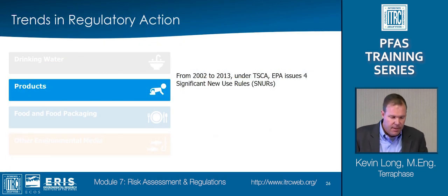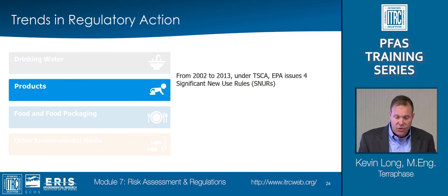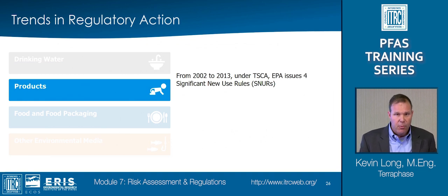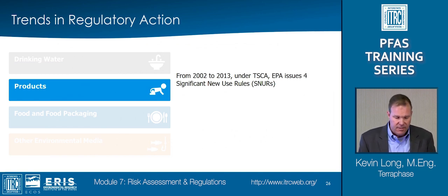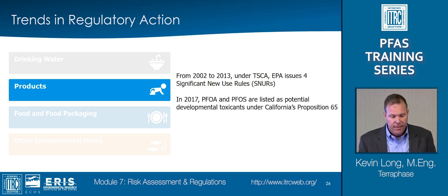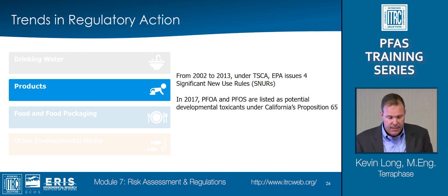With regards to product regulations, from 2002 to 2013, under the Toxic Substances Control Act, EPA issued four significant new use rules covering 271 PFAS, including PFOA and PFOS. These significant new use rules placed notification requirements on the manufacturing and importing of specific PFAS and allowed for continued low-volume use of some compounds in certain circumstances. In 2017, PFOA and PFOS were listed as potential developmental toxicants under California's Proposition 65. The Prop 65 listing includes labeling requirements for manufacturers, distributors, and retailers, and restricts the discharge of PFOA and PFOS to sources of drinking water.